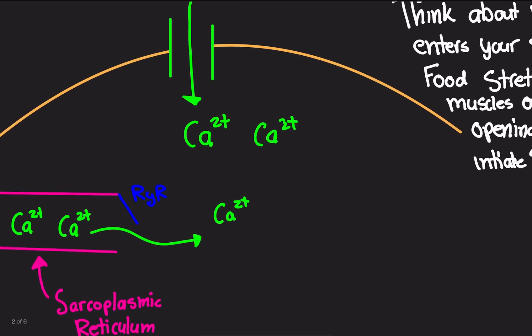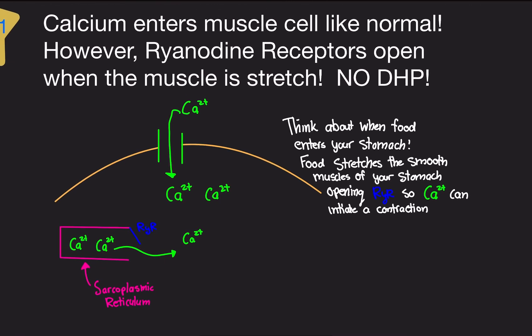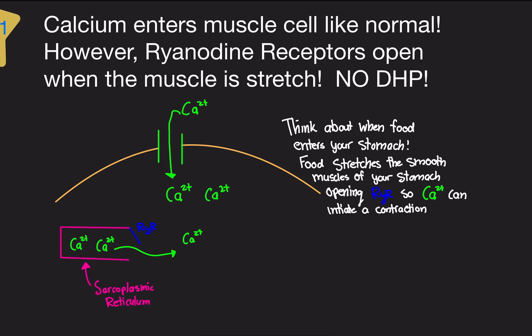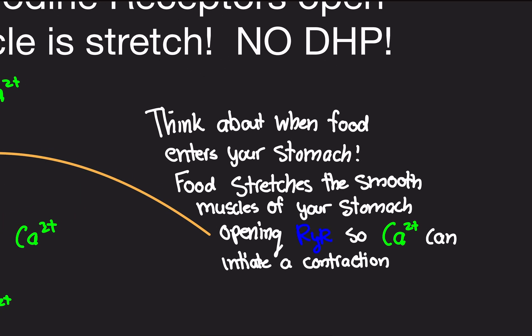This is a little different from skeletal muscle — there are no DHP receptors here. So how do ryanodine receptors open in smooth muscle? They can actually open with stretch. Think about when food enters your stomach: food stretches the smooth muscles of your stomach, technically stretching and opening the ryanodine receptor, so calcium can initiate a contraction. This is exactly how your stomach starts contracting when you eat.